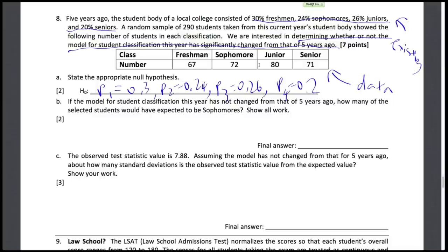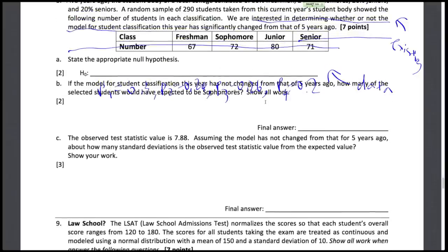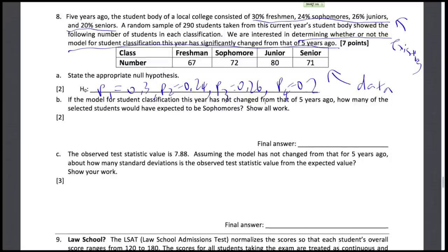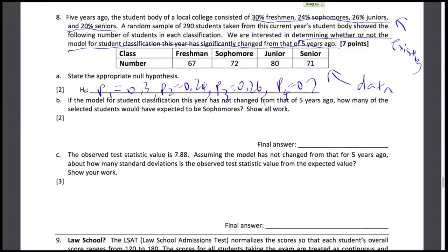The second part asks, if the model for student classification this year has not changed from that of five years ago, how many of the selected students would have expected to be sophomores? Well, we have a total number of 290 students.